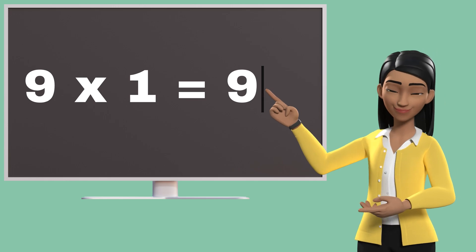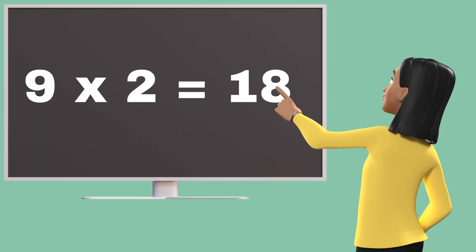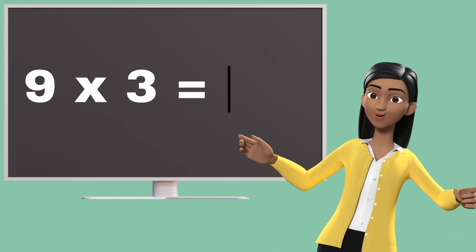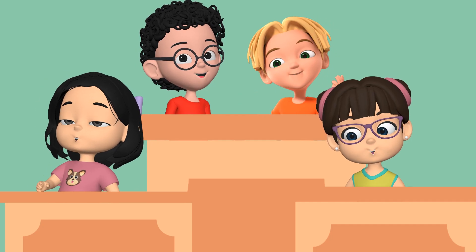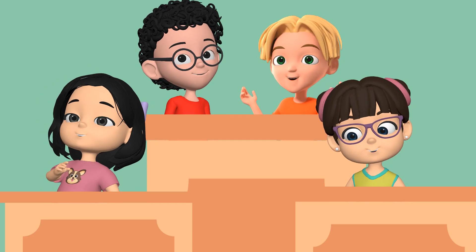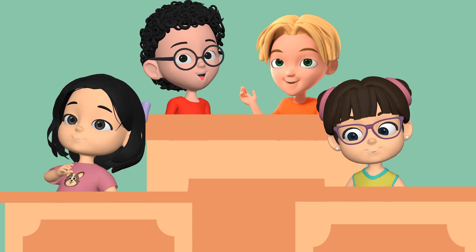Nine ones are nine. Nine twos are eighteen. Nine threes are twenty-seven. Nine fours are thirty-six. Nine fives are forty-five.